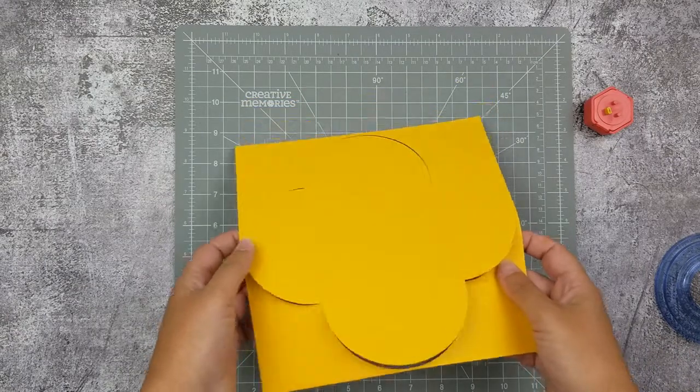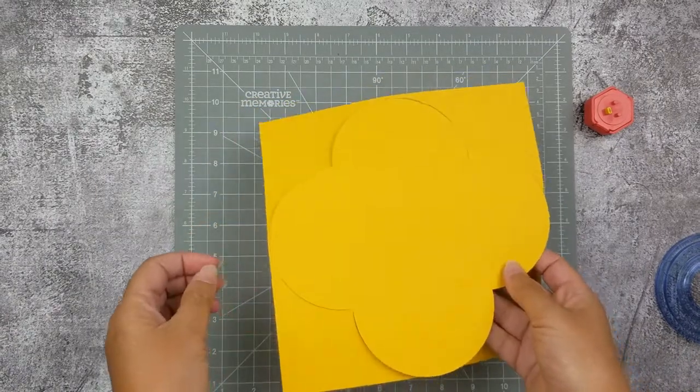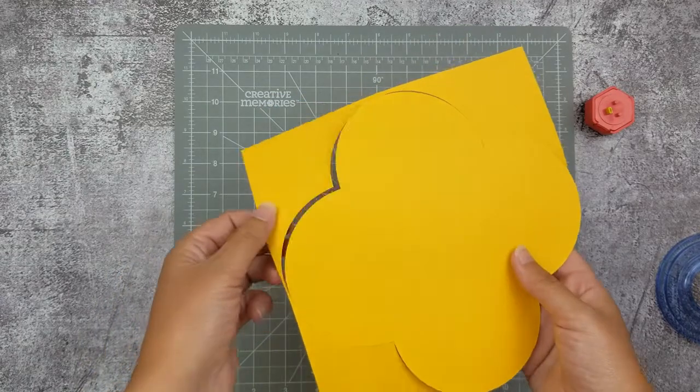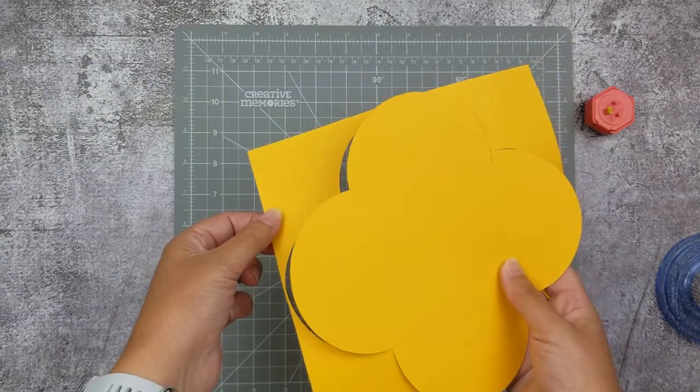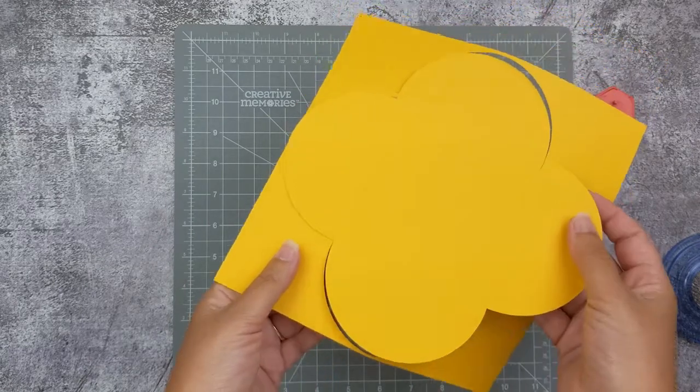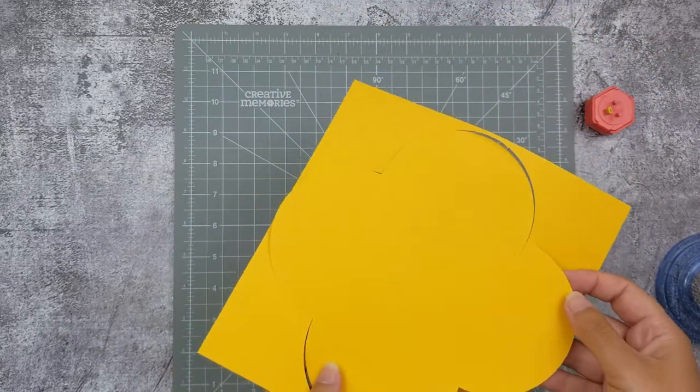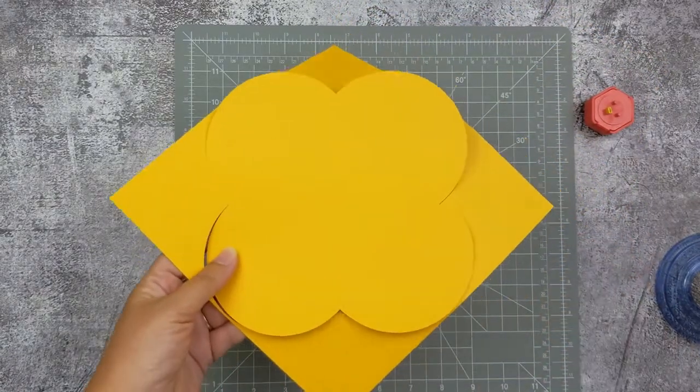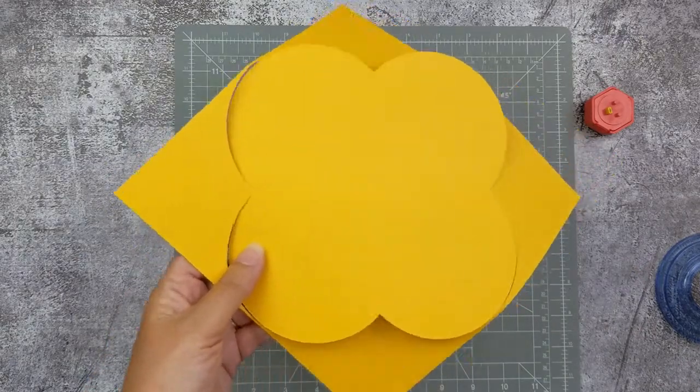We now have the base of our card. If you've cut completely precisely, the base of the card will come apart from the outside. If you're like me and you may have misaligned ever so slightly, you will just need a pair of scissors to snip it free of the outside layer.